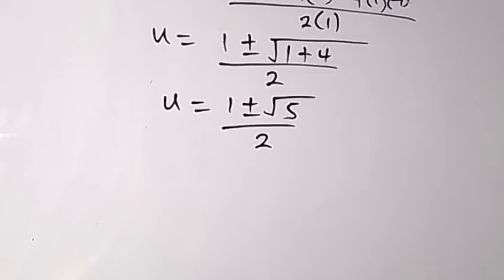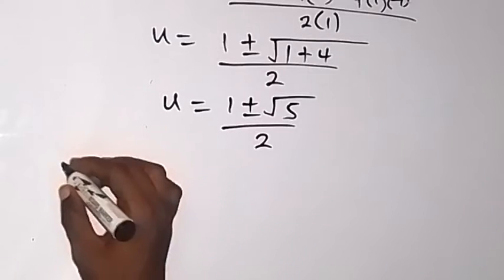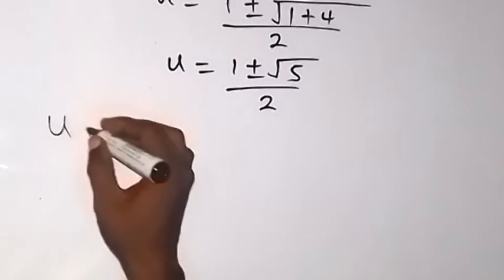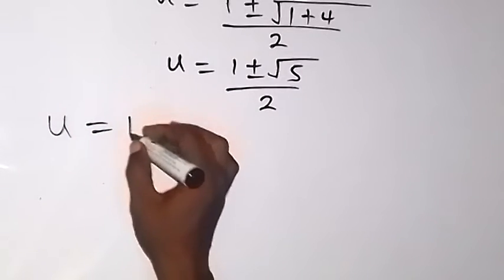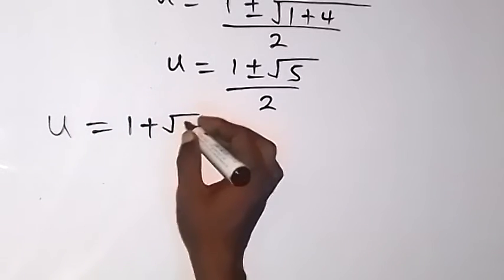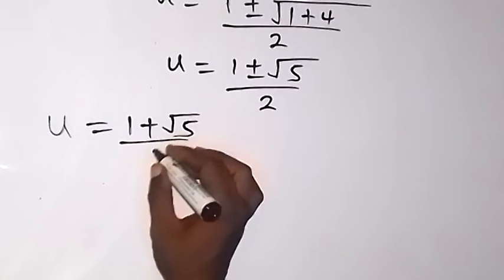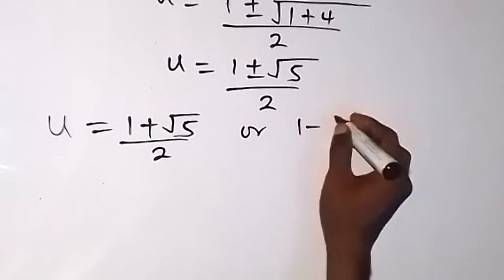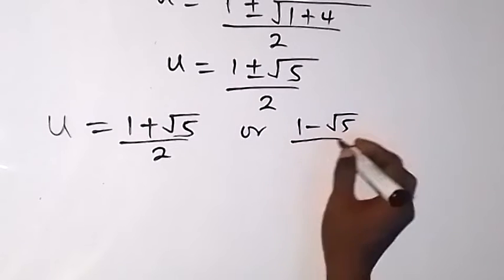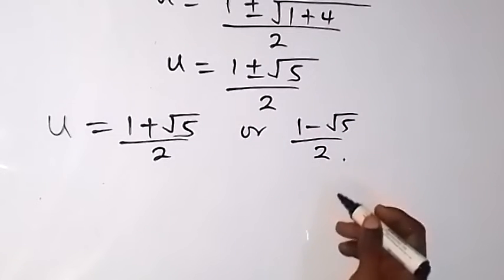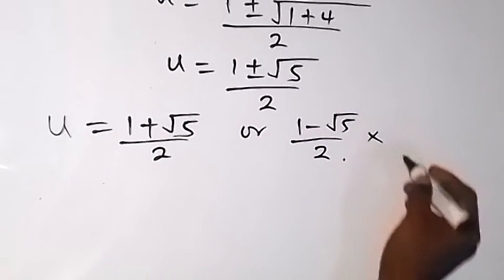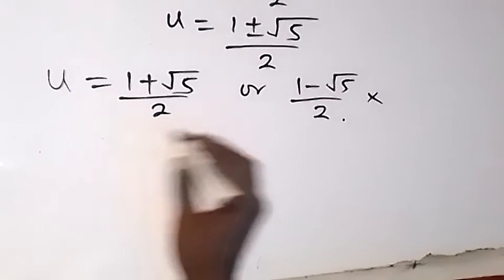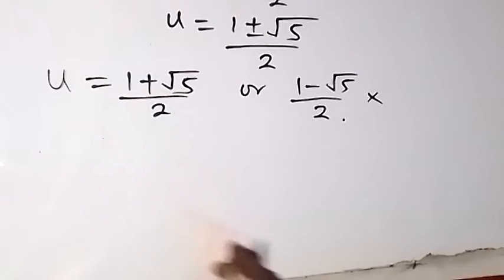Now we have two values for u: that's 1 plus root 5 over 2, or we have 1 minus root 5 over 2. Obviously, the second value will not give us the solution we are after.